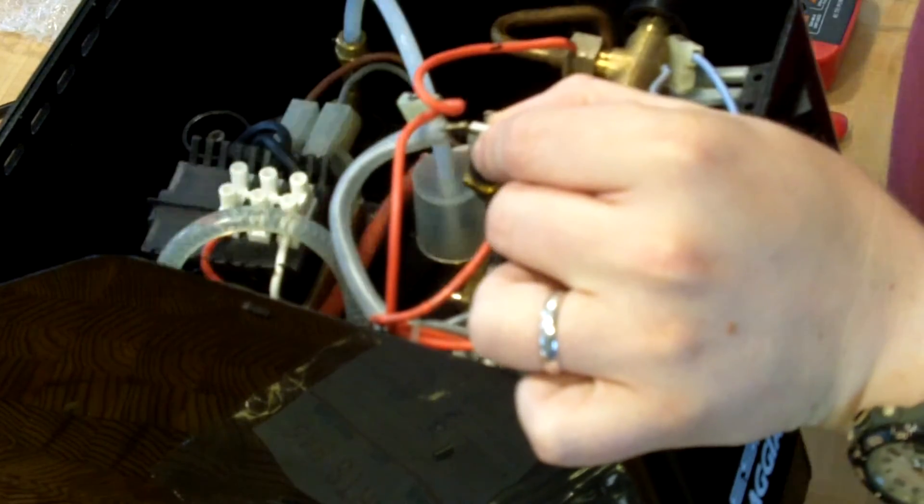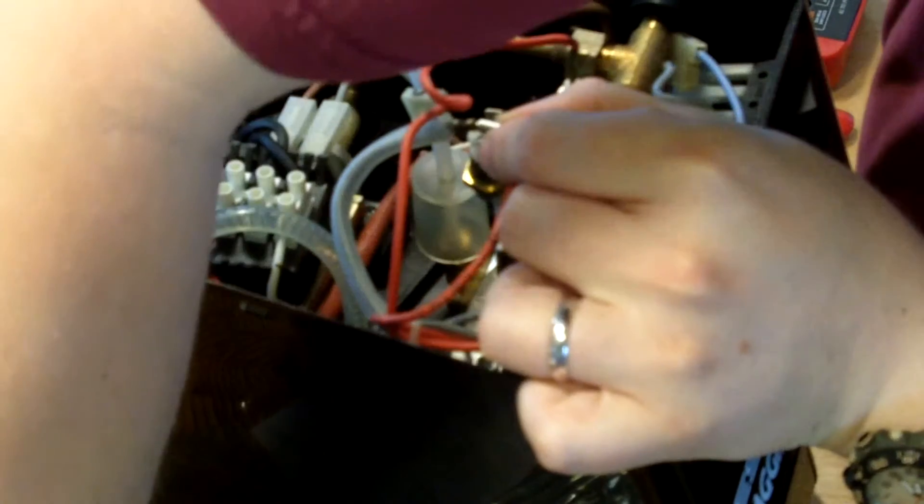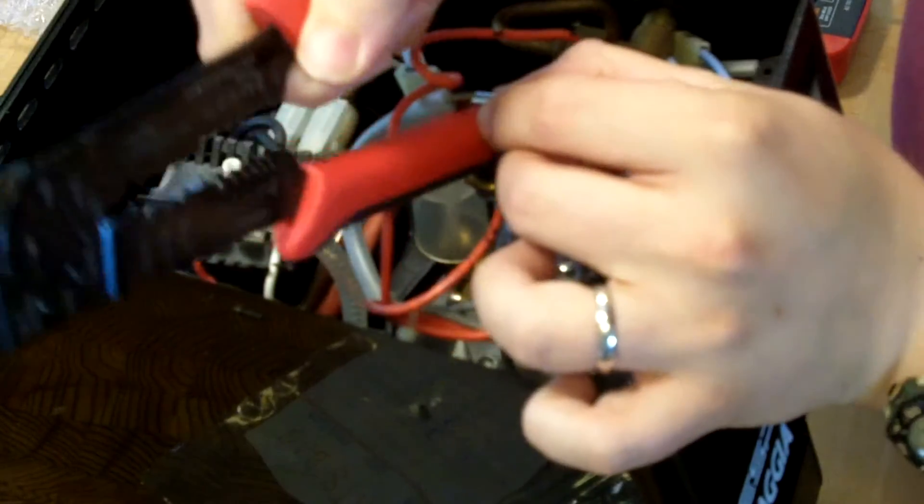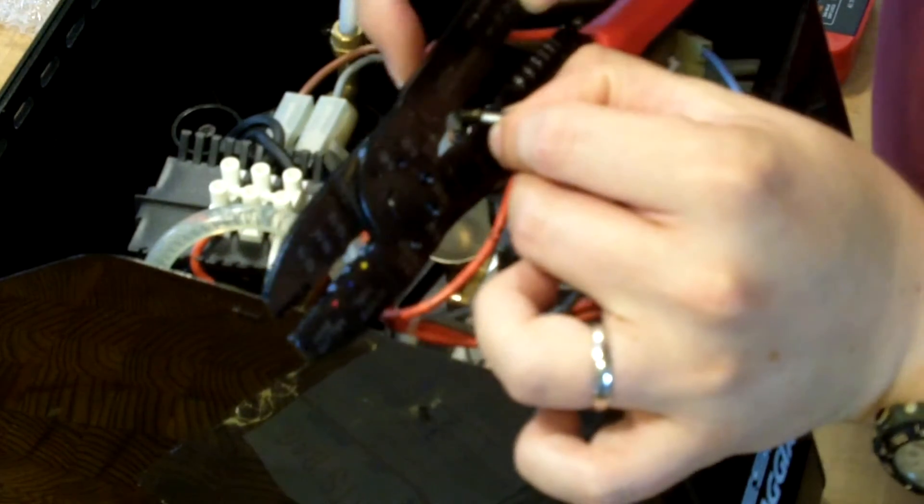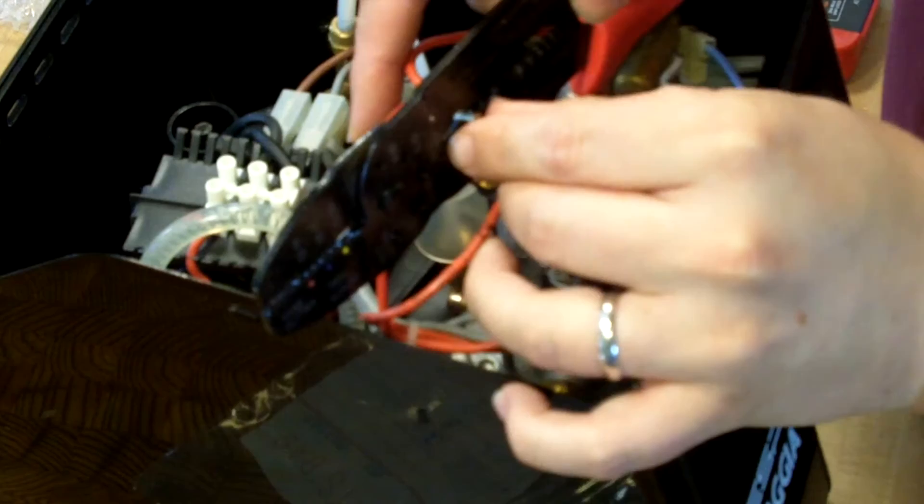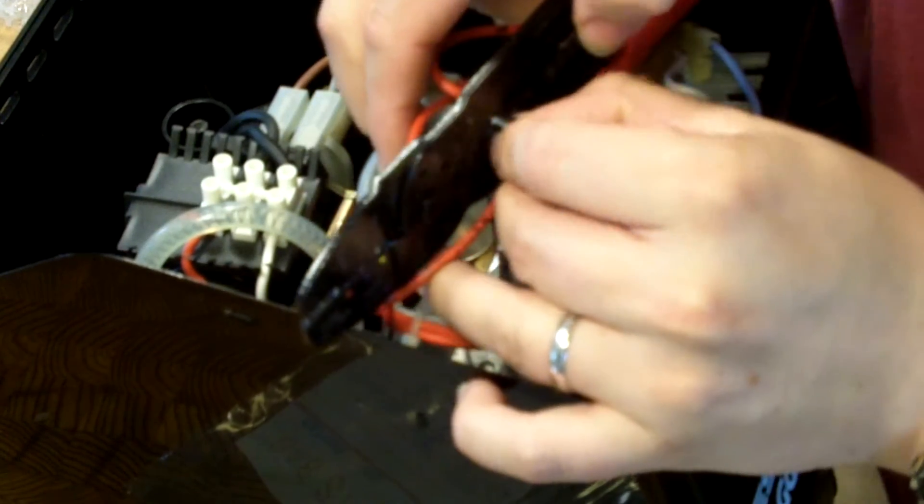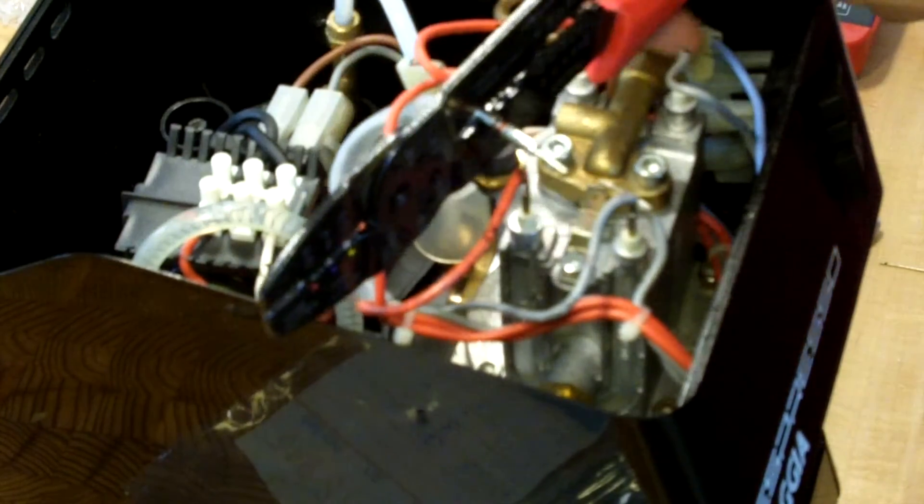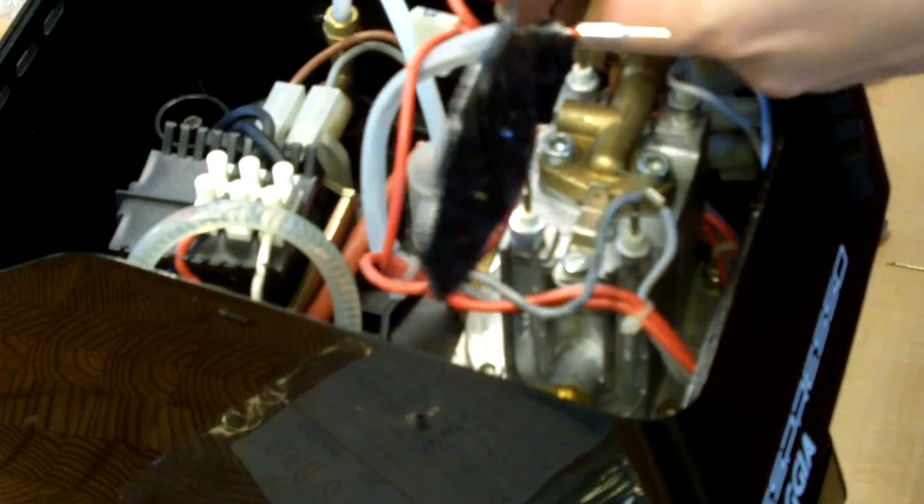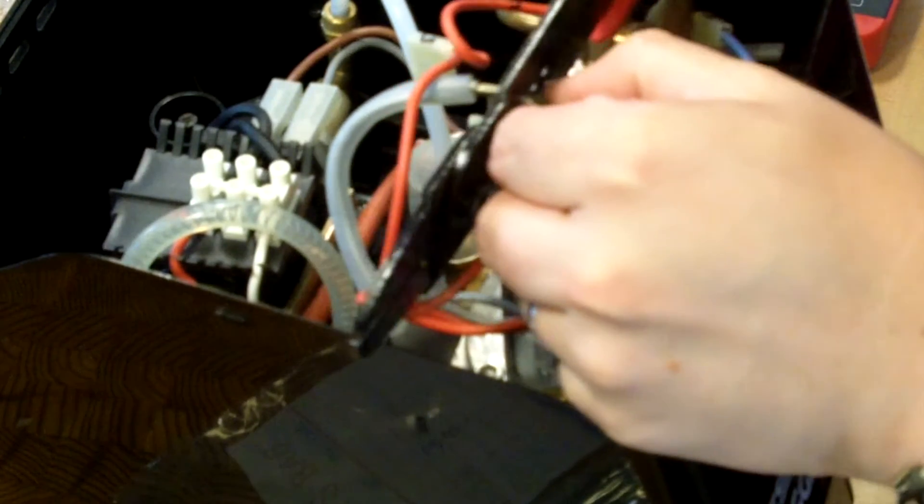Take one of these crimp tools. This is a 16-14 crimp here. Find the non-insulated one for 16-14. Once that's in, get everything all nice and connected, which is a little bit of a balancing act. And once we're in there, give it a good old squeeze. I was taught that you should do these basically as hard as you can. And then move it along. Do the same thing.